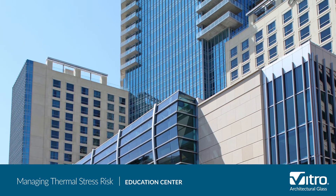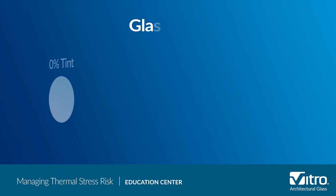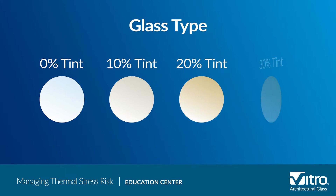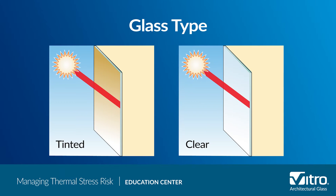The first factor is glass type. Glass is available in a wide range of colors, from extra clear to the deepest gray tint. Tinted and spectrally selective glasses absorb more solar radiation than conventional clear glass and therefore heat up faster, which makes them more susceptible to thermal stress breaks.